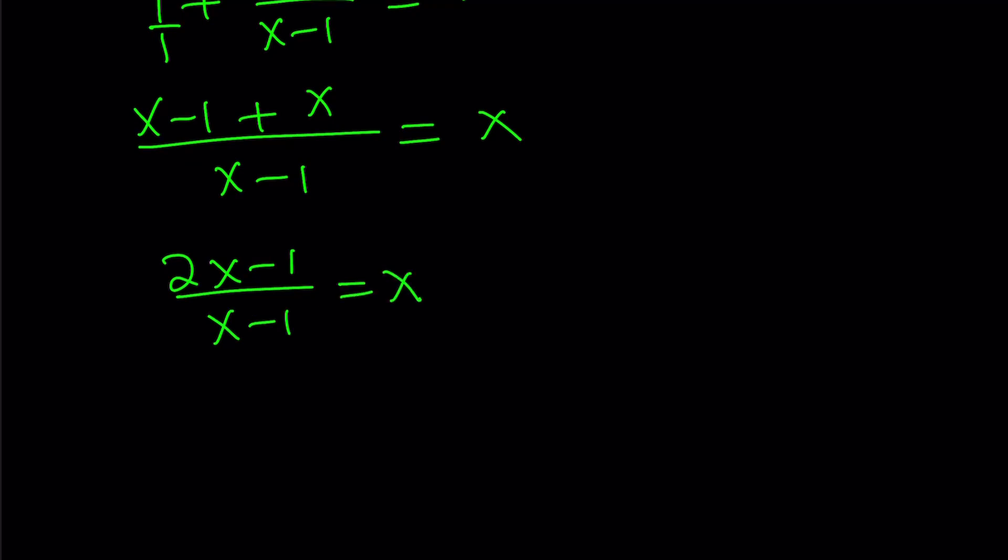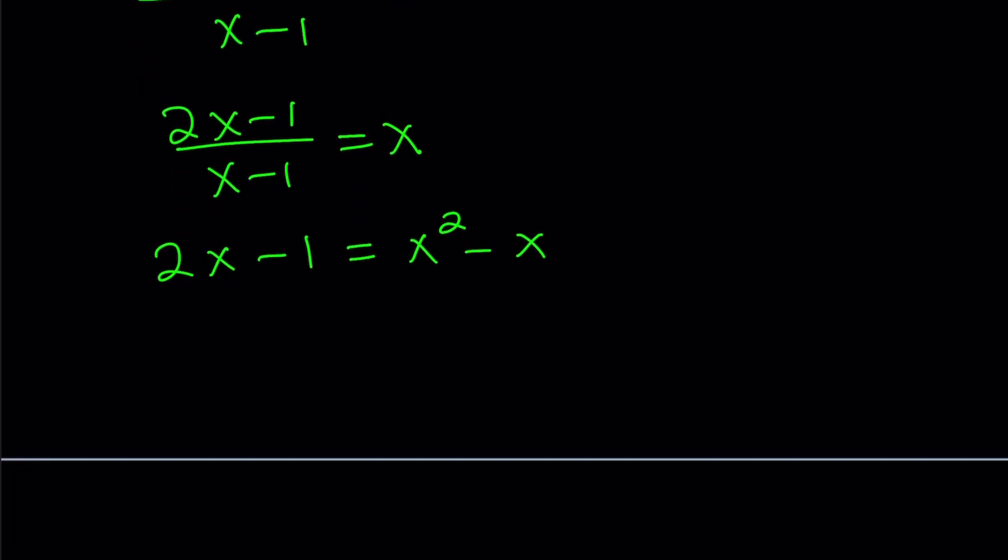From here we can cross multiply. That gives us 2x minus 1 equals x squared minus x. If you put everything on the same side that's going to give you a quadratic equation. x squared minus x minus 2x, that's going to become minus 3x, and then minus 1 plus 1. It's going to become x squared minus 3x plus 1 equals 0.